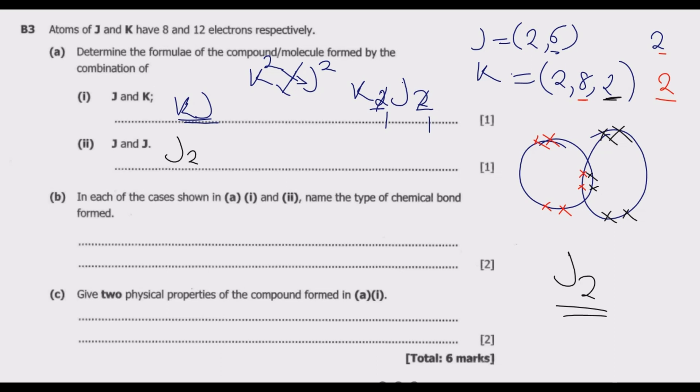Question B: In each of the cases shown in L1 and L2, name the type of chemical bond formed. When a metal and a non-metal combine they form an ionic bond, which is the case with L1. So L1 is ionic bond. When a non-metal and a non-metal form a compound, L2 forms a covalent bond. So L2 is covalent bond.